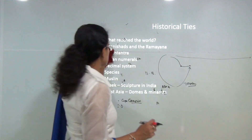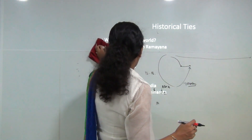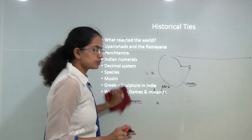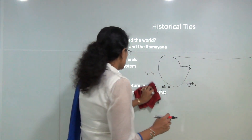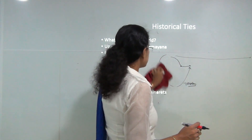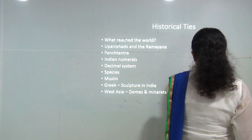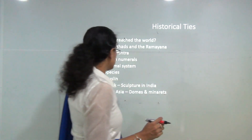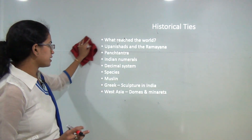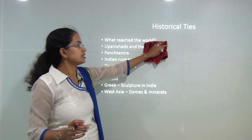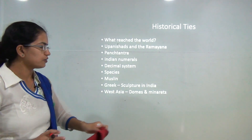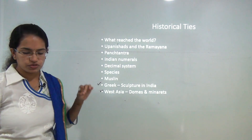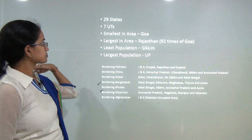India has numerous historical ties with the world. Works like the Upanishads, Ramayana, and Panchatantra are popular globally. The Indian numeral system, the decimal system, and the concept of zero — all invented in India — were accepted worldwide. India's spices and muslin were also famous. At the same time, India incorporated influences from abroad, such as sculptures from Greece and domes and minarets from West Asia.